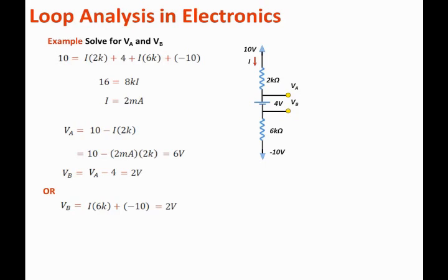So solving for VB can be done using two approaches. One approach is to say VB equals the voltage at the top minus the voltage drop. Another approach is to say VB equals the sum of the voltages below it: the voltage across the 6k ohm resistor plus the remaining voltages. Either way is valid.